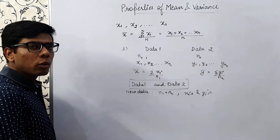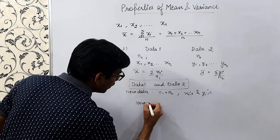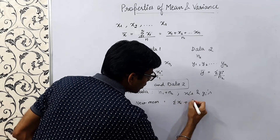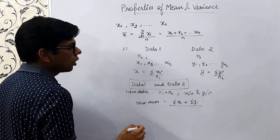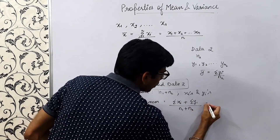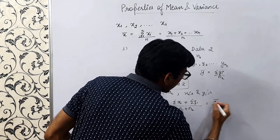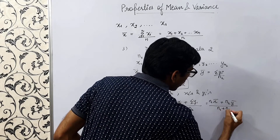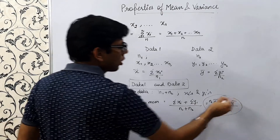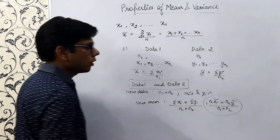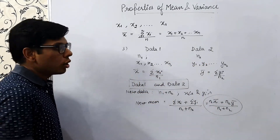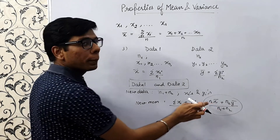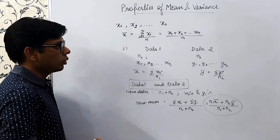We want to calculate the new combined mean. It is (Σxi + Σyi) / (n1 + n2). Since Σxi = n1·x̄ and Σyi = n2·ȳ, this becomes (n1·x̄ + n2·ȳ) / (n1 + n2). So the new combined mean is a linear combination of x̄ and ȳ, the means of the individual series. This is the third property of mean.